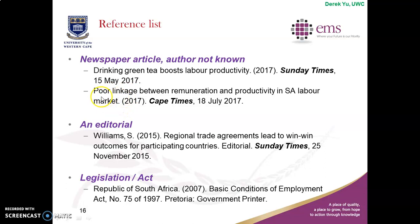What if you have a news article but you don't know the author? The name of the author is not shown clearly. Then all you have to do is write the title of the article first. For example: 'Drinking Green Tea Boosts Labor Productivity,' 2017, Sunday Times, then the date. Next one — again you don't know the authors, so show the title first: 'Poor Linkage Between Remuneration and Productivity in the South African Labor Market,' 2017, Cape Times, 18th of July 2017.